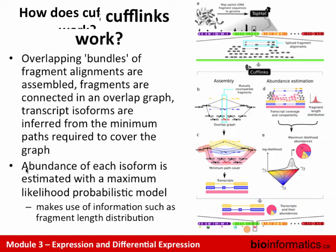Cufflinks will ask whether a read spanning from exon 1 to exon 5 is likely given the reported fragment size of the library. It uses other pieces of information to assign reads to the most likely transcript and come up with estimates per transcript. It's much more sophisticated than raw counting methods and generally works pretty well, but it's not perfect either.